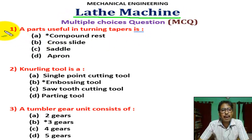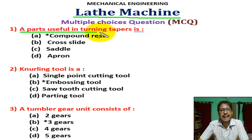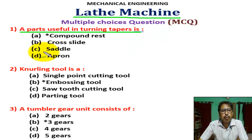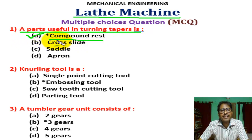Question number one: a part useful in turning taper is? There are four options. Correct answer is A — compound rest. Compound rest is a useful part in taper turning.